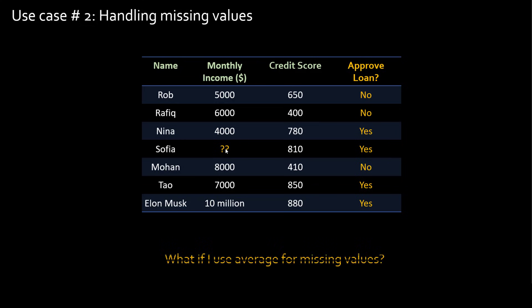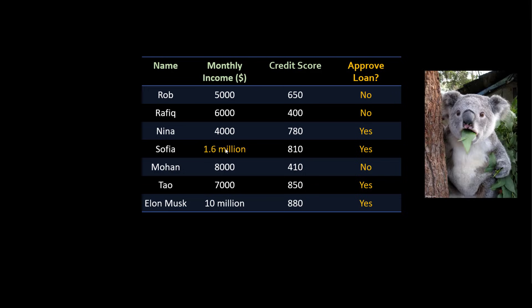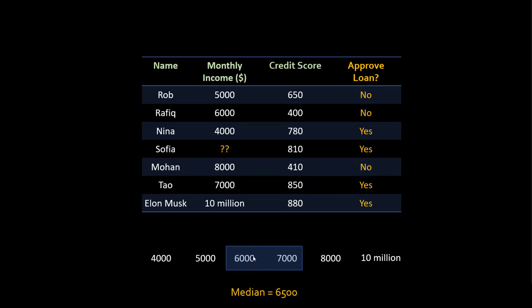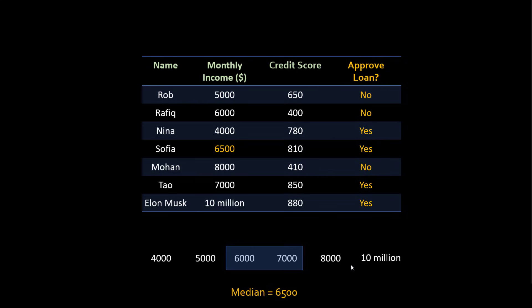Again, you can use average to estimate the missing monthly income. The average would be $1.6 million — because Mr. Musk is my neighbor and has $10 million income, it is skewing up our average number. So approximating that Sophia might be earning $1.6 million a month is not a good idea. Here again, we can use median. You take the middle two values, average them out — $6,500 — and that's probably a better approximation. So although $10 million is present here, the median allowed me to come up with the right guess.